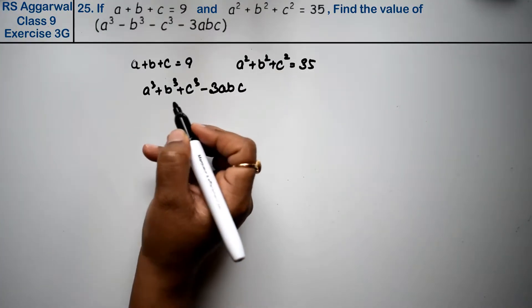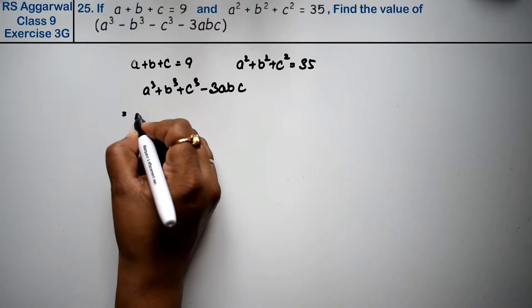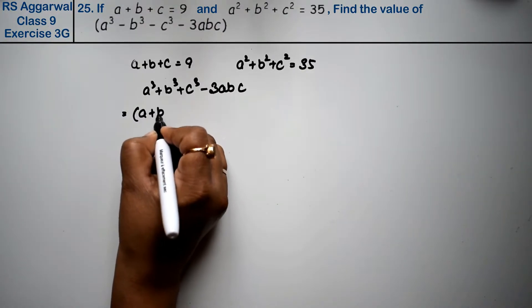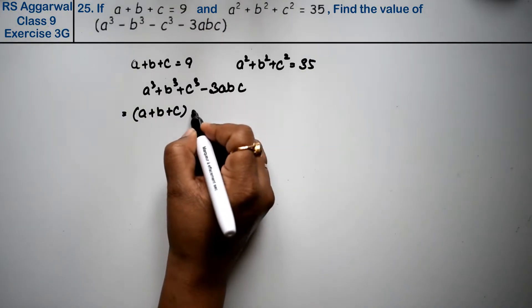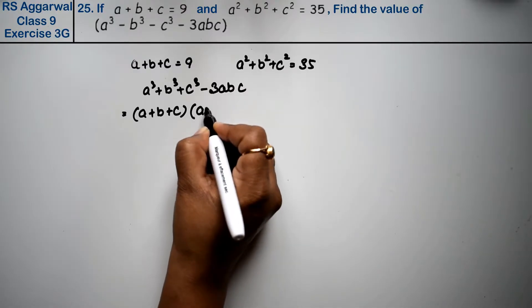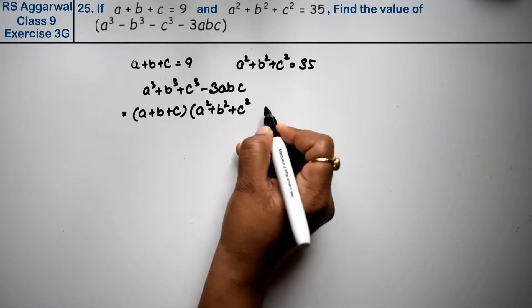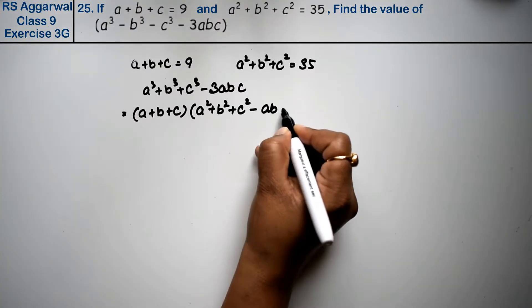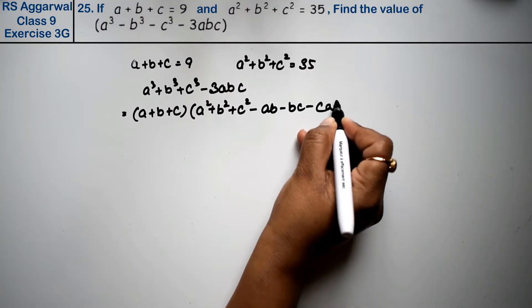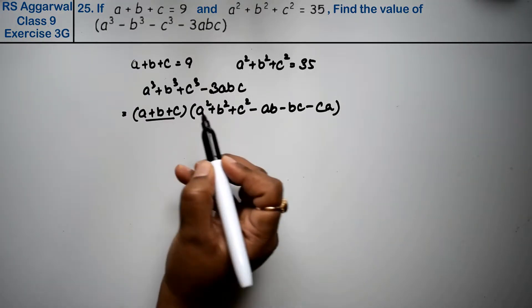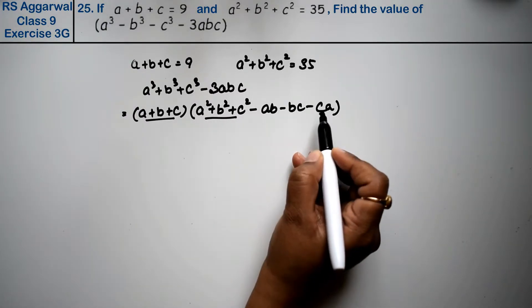Friends, this formula is what we need. A plus b plus c in brackets times a squared plus b squared plus c squared minus ab minus bc minus ca. Right, friends? Now we know this value and this value, but we don't know this value.